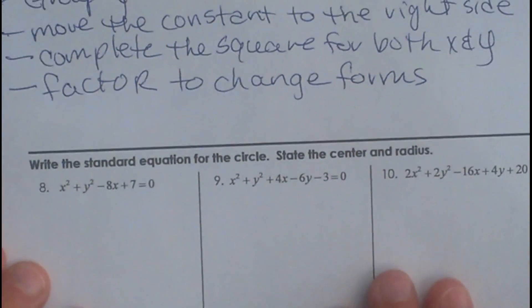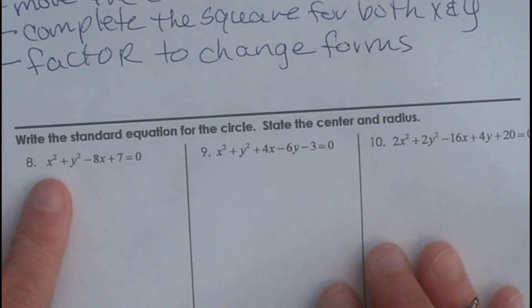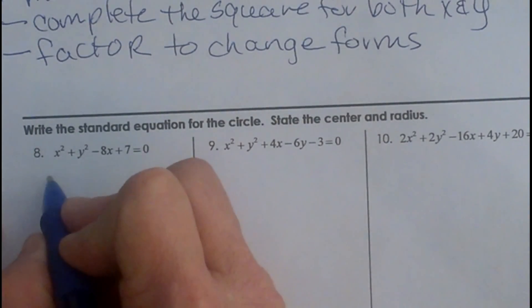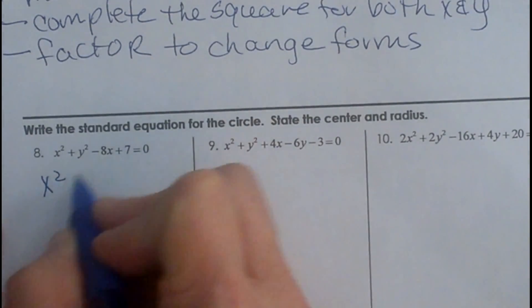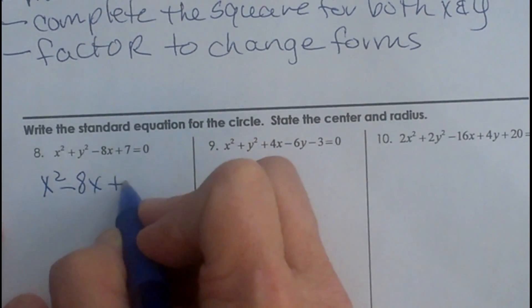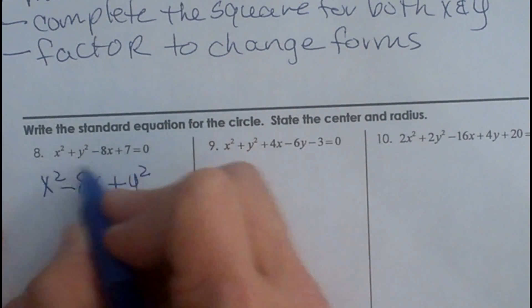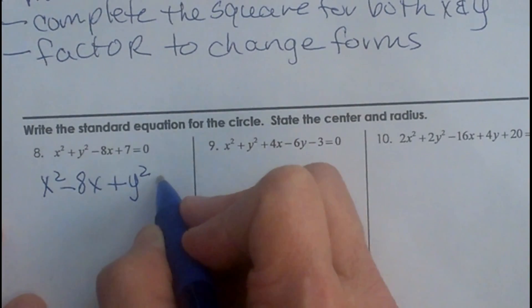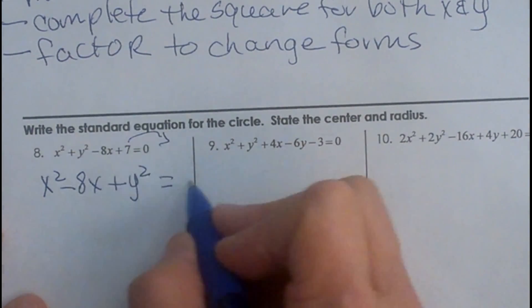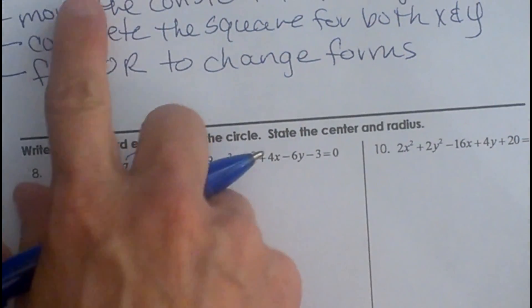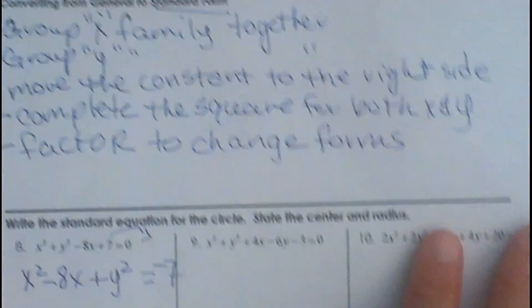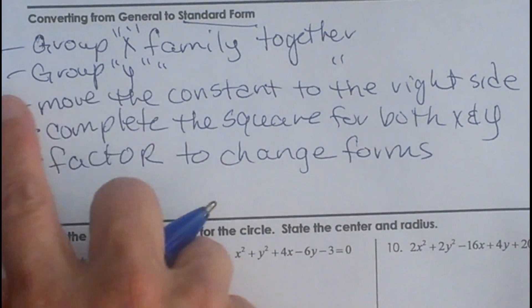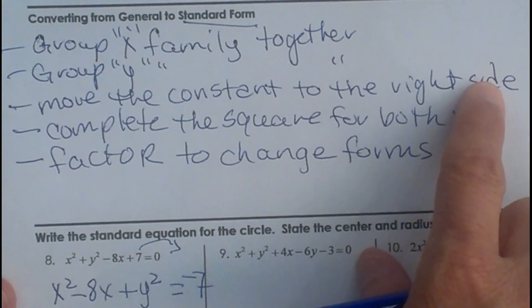Let's look at the first one. We are going to group our x's together and our y's together. So I am going to put my x squared first and then my negative 8x second. Then I am going to do plus y squared, and I do not have a y value so I am just going to keep that as y. Then I am going to move this 7 to the other side so it is negative 7 over here. So I have grouped my x's together and grouped my y's together and I have moved the constant to the right side.